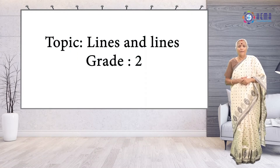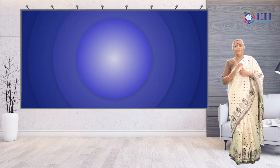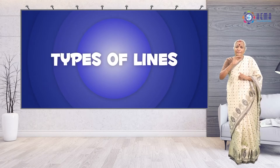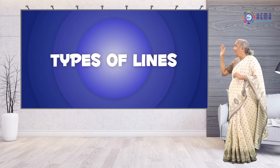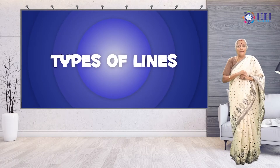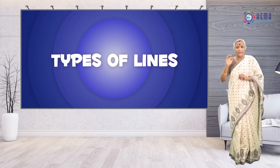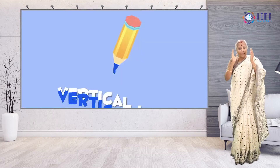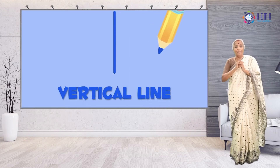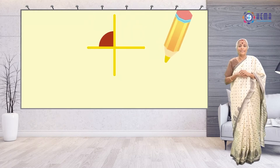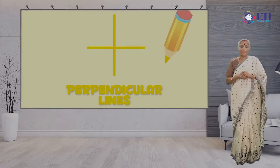In geometry, there are different types of lines, such as horizontal lines, vertical lines, parallel lines, and perpendicular lines, etc.